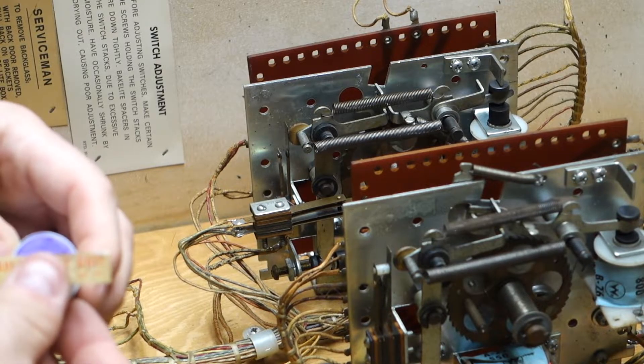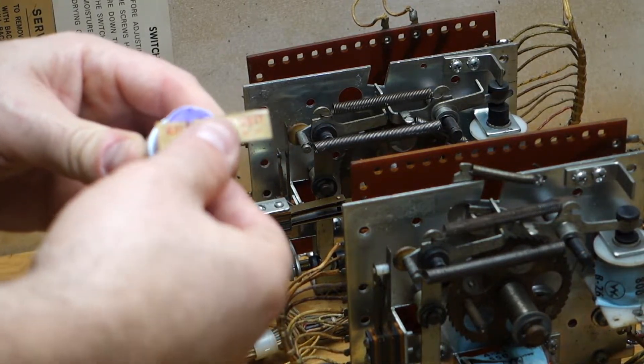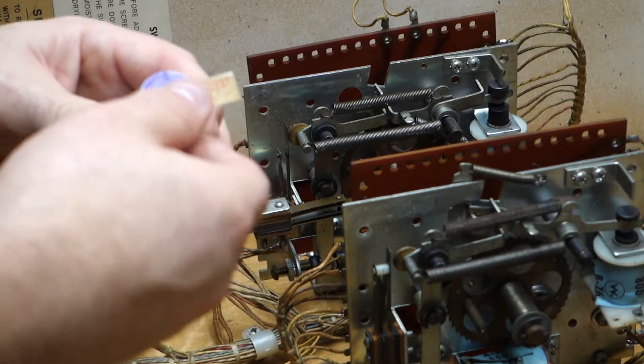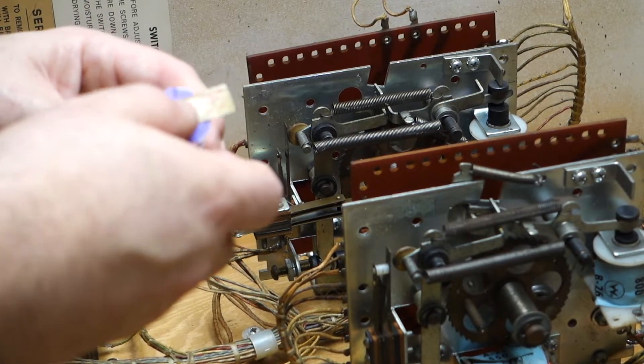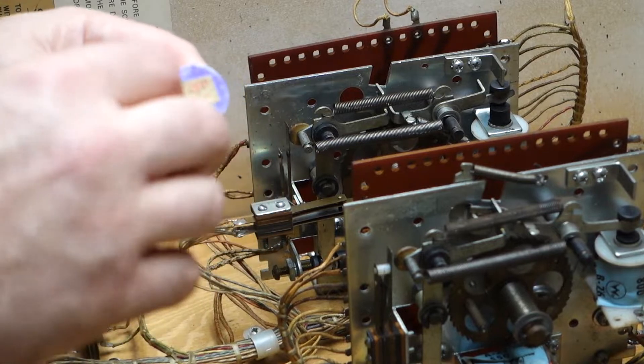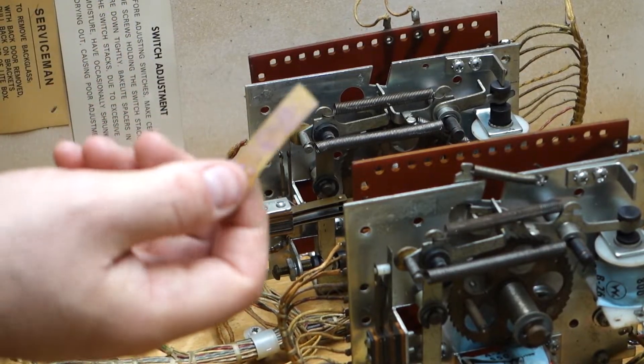You can just rub the label over the top of it, like this. Make sure you get the back of it coated real good. Now your label is sticky again.